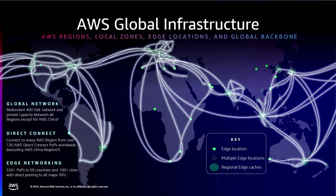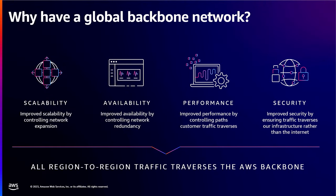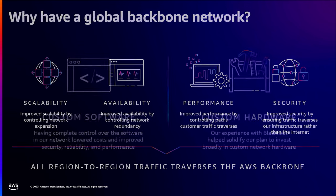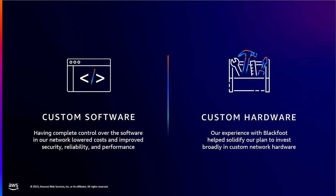Coming back to the map, it looks even more impressive when we overlay the backbone network on top of it. Each one of these highlighted lines you can think of as a pair of 400 gigabit connections or fiber cables that we manage and operate globally. This is all a private network that AWS has built, manages, and operates. Very early on, when we started building our cloud business, we decided that to be able to pass on to you as our customers the availability, scalability, performance, and security you were expecting from us, we had to have full control on our network. So we took the decision to build our own global private network, which led us to also developing our own custom hardware and custom software.